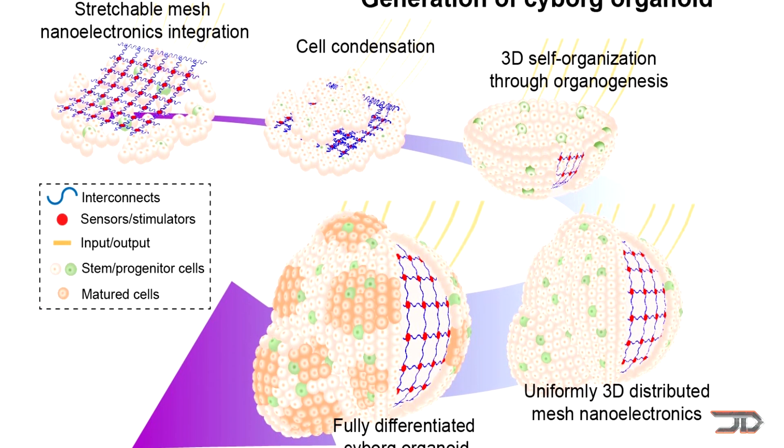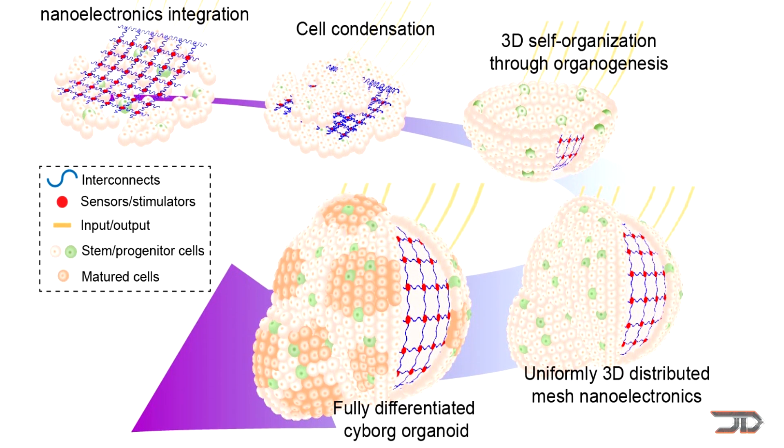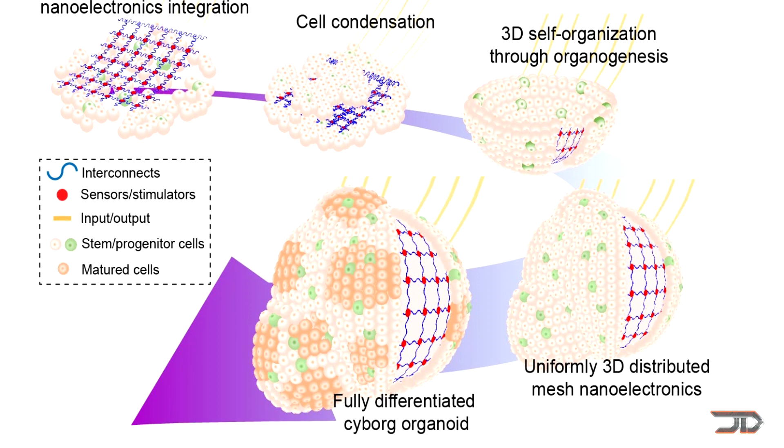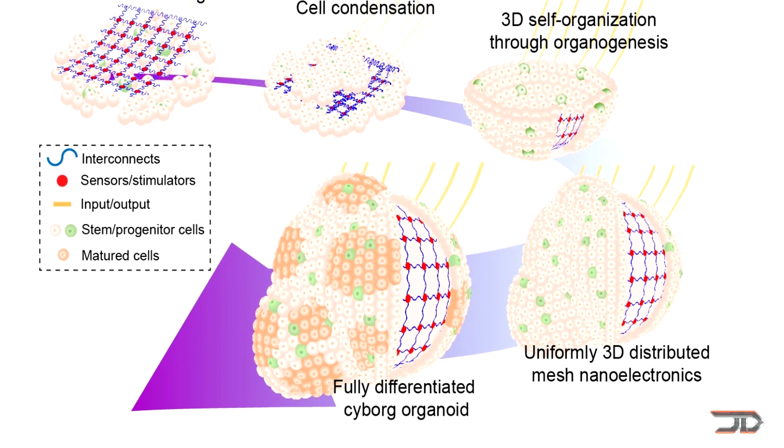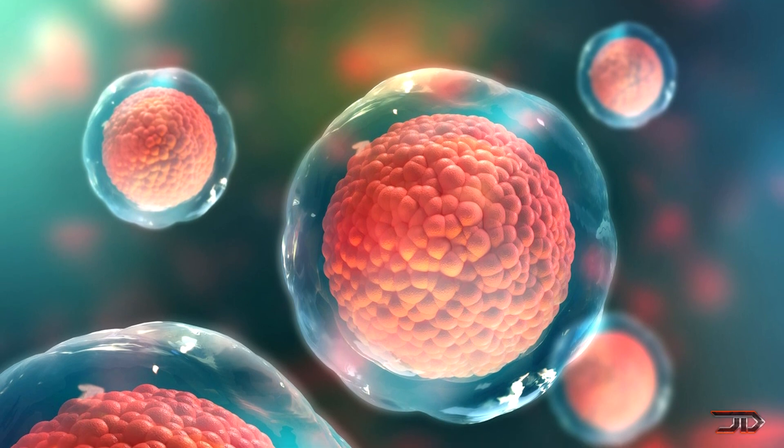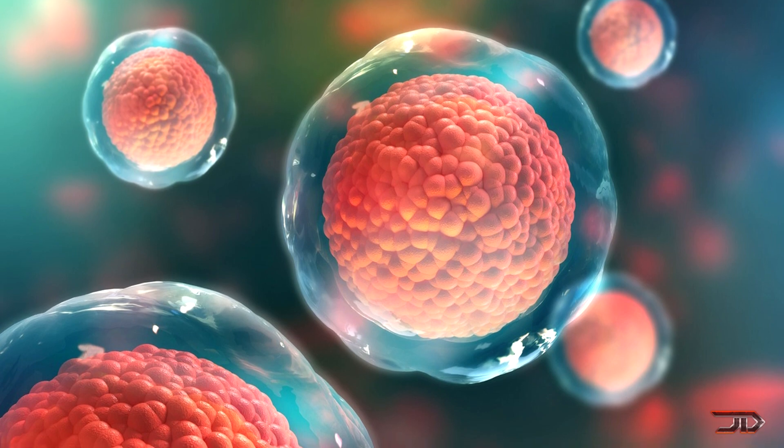One neat thing about this experiment is that the stem cells can form into other cells, so with the integrated sensors, scientists can understand more about the development process of a stem cell. Now, once again, this is where a pre-programmed algorithm can come into play, and it might be able to tell the stem cell what to convert to in the future.